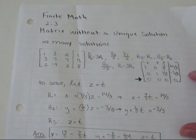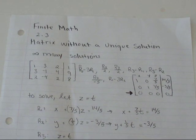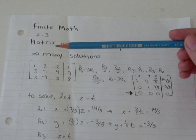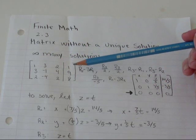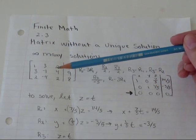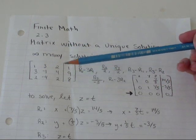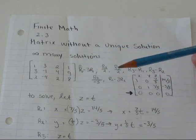So I'm going to start off talking about infinitely many solutions. So the example that I have that ends up having infinitely many solutions is, I've just drawn it in the matrix. I haven't drawn it with all the variables written in. But anyway, 1x plus 3y plus 2z equals 1, and 3x minus y plus 4z equals 9, and 2x minus 4y plus 2z equals 8.